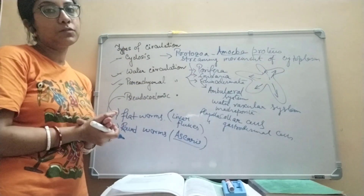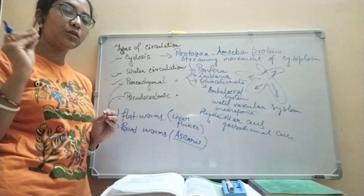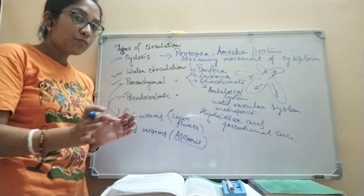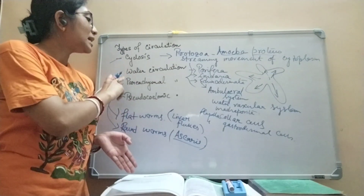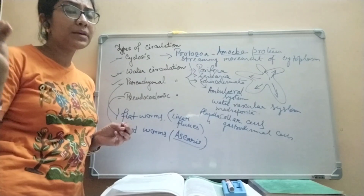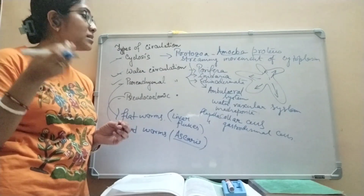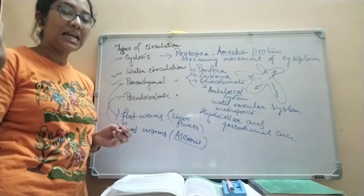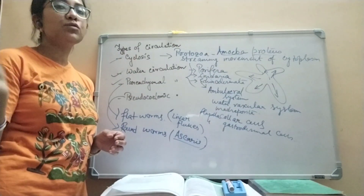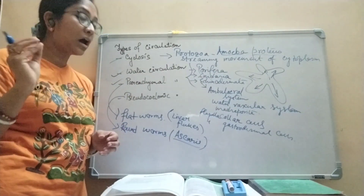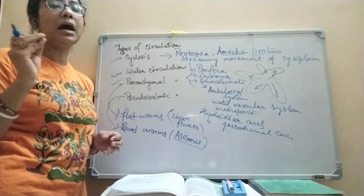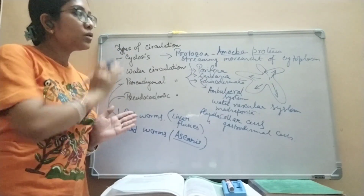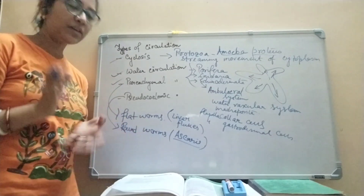These are the different types of circulation in the case of invertebrates. First, cyclosis — found in protozoa: streaming movement of cytoplasm. Second, water circulation — found in mainly marine invertebrates: Porifera, Echinodermata, and Cnidaria. Third, parenchyma circulation — found in flatworms, phylum Platyhelminthes. Fourth, pseudocoelomic circulation — found in roundworms such as Ascaris, phylum Nematoda.